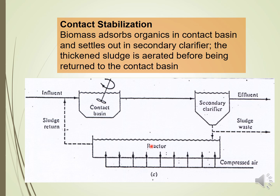In the contact stabilization configuration, the recycled sludge is aerated in a separate stabilization tank where the absorption of organics onto the activated sludge floc takes place. The sludge is then ready to oxidize the wastewater and is returned to a separate contact basin where oxidation occurs. The mixed liquor then flows to the secondary clarifier and the cycle continues. By using this configuration, around 50% of the tank volume can be reduced, representing a very significant cost saving compared to conventional activated sludge.